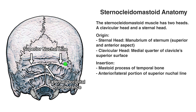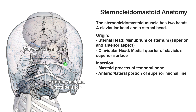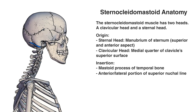Bear in mind the sternocleidomastoid muscle doesn't span the entirety of the superior nuchal line. Rather, it just sticks to about the lateral half of the superior nuchal line — around where those two arrows are pointing either side, that would be where the sternocleidomastoid's insertion comes up to. And just for reference, you can see that lateral view of the insertion once again.